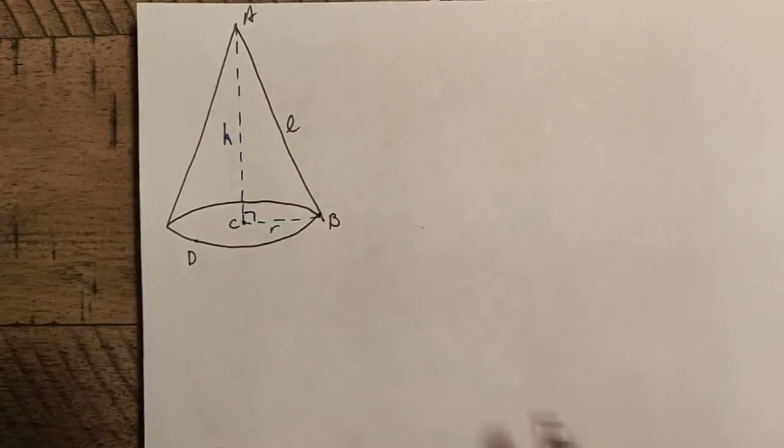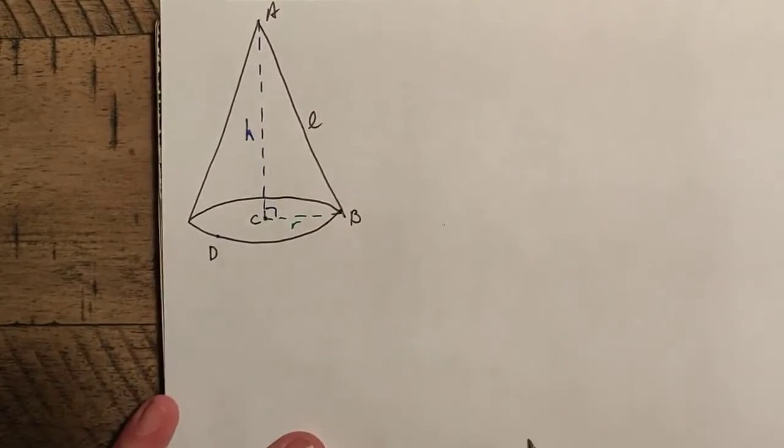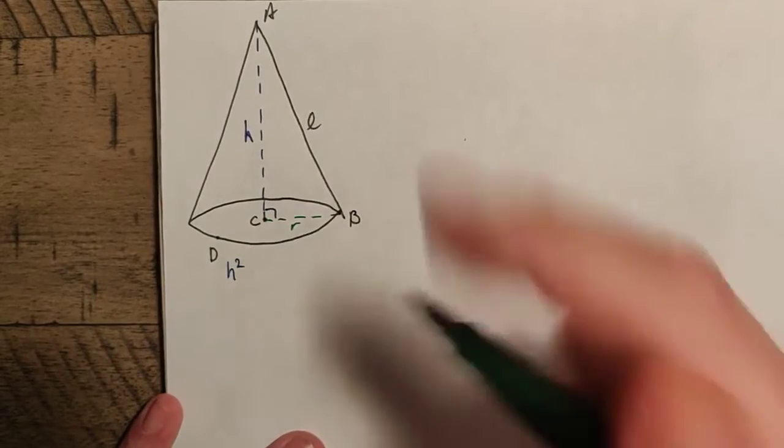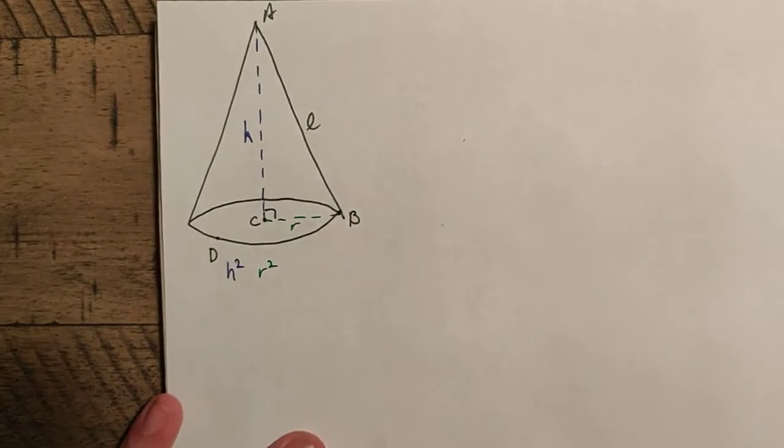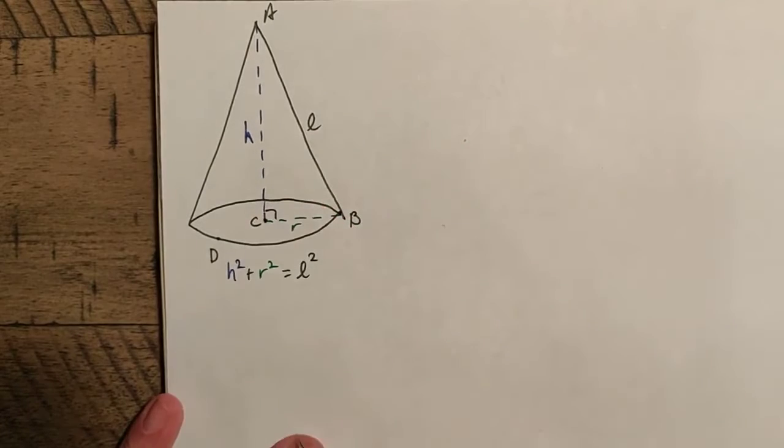So this actually leads us to something very important here, because we've got a right triangle. A, B, C is a right triangle with this, and through Pythagorean Theorem, we can actually determine that H squared plus R squared is equal to L squared. So that's going to be an important thing here. We'll talk about that later.